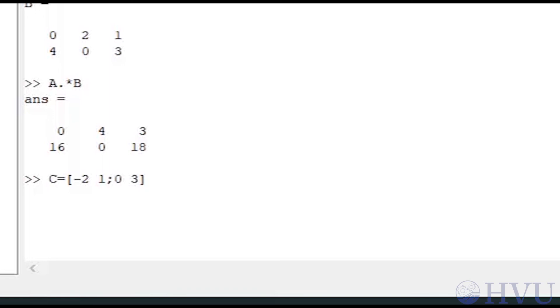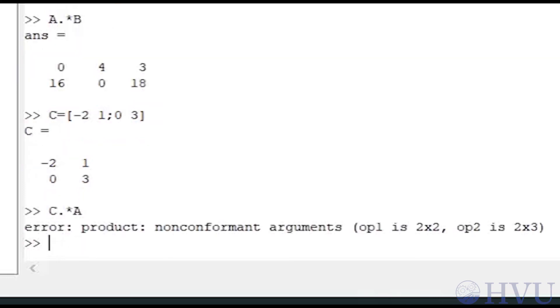Which gives us a 2 by 2 array. We can't multiply that by either of our previous arrays. The sizes don't match. For example, if I type C dot times A, I get an error.